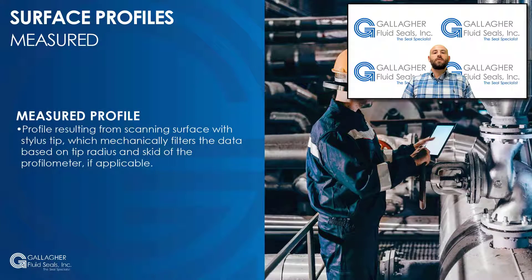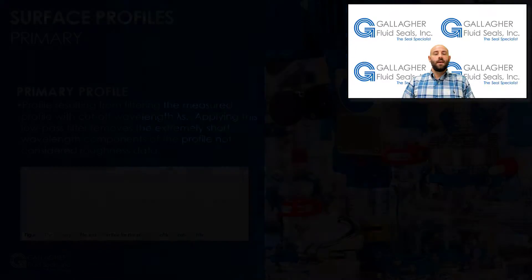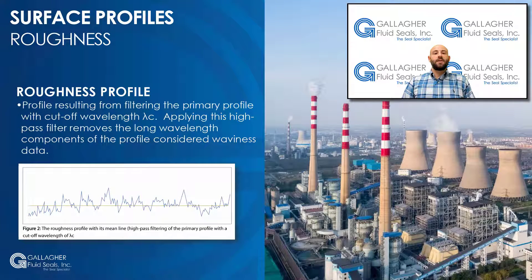Next, there are a few surface profile definitions for us to discuss. The first is the measured profile, which is the profile resulting from scanning the surface with a stylus tip. The data from this profile has been mechanically filtered based on the stylus tip radius and, if applicable, the skid of the profilometer. The primary profile results from filtering the measured profile with cutoff wavelength lambda s. Applying this low-pass filter removes the extremely short wavelength components of the profile not considered roughness data.